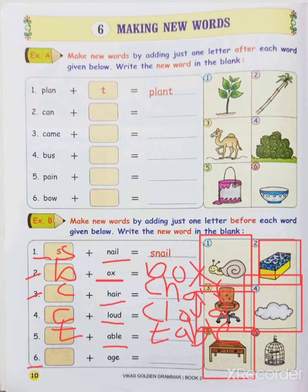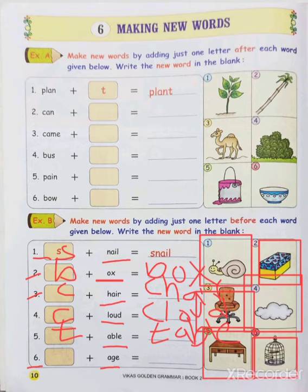Last one — sixth. What is the word here? Age — A, G, E. What is your age? Kitne saal ke ho — age. Which picture is given here? That is a cage. So age is also a word. What is the spelling of cage? C, A, G, E — cage. By adding one letter C before the word, we get a new word: C, A, G, E — cage.